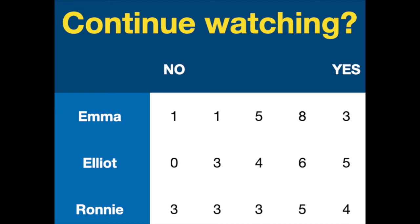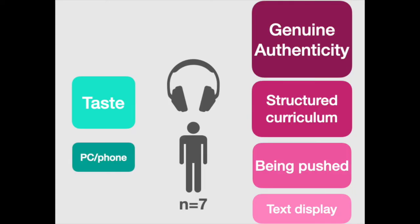Let us now turn to the interview results. We carried out interview sessions with seven students and asked in more detail about the videos they had watched. What we found is that there are some factors that we cannot control. One is students' taste. For example, some students loved Elliot — in fact one student said that he learned how to speak like Elliot when he was at high school — but at the same time, some students found Elliot quite irritating. Another factor we cannot control is what devices students use: some people use a laptop and others use their phones, and which device they use may have an impact on how they perceive a video.